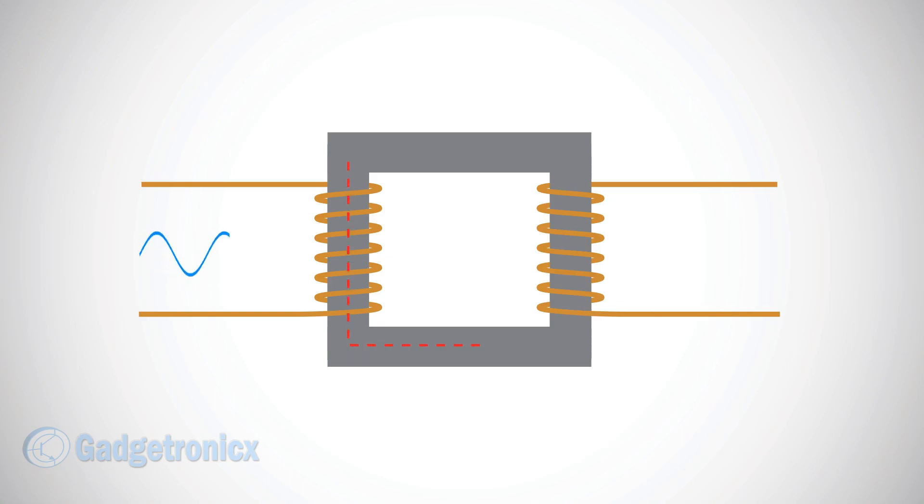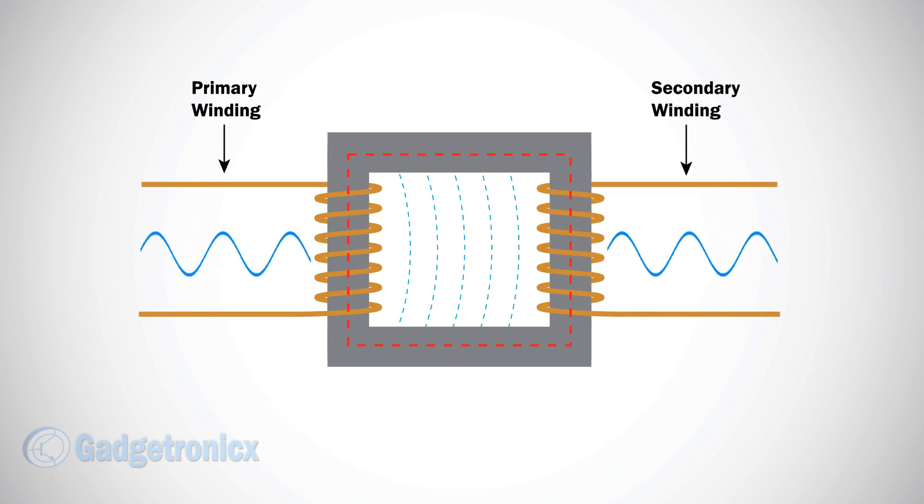Core is used to direct the path of magnetic field and eliminate losses. The coil in which input AC signal is fed is called the primary winding. The coil onto which the signal is induced by the input signal is called the secondary winding.